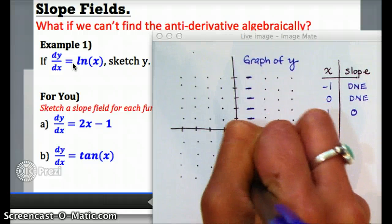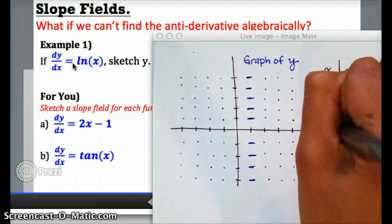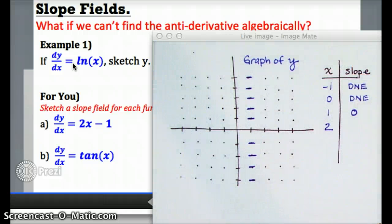And this is actually the start of something called a slope field. Let's repeat the process. In fact, let's check what the slope should be when x equals 2.